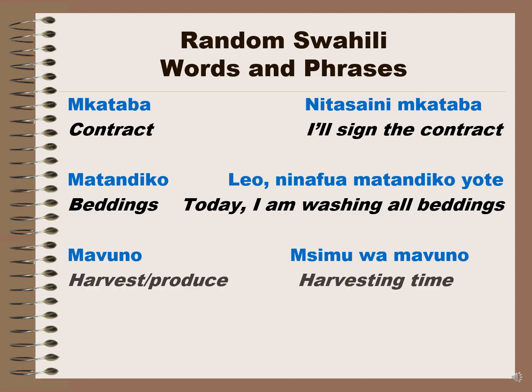Mavuno is harvest or produce — agricultural produce. Msimamo wa mavuno is harvesting time.